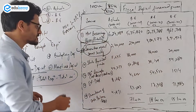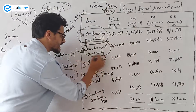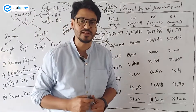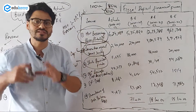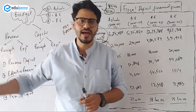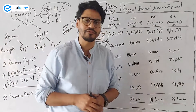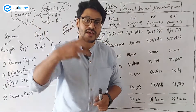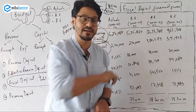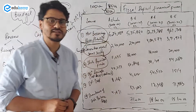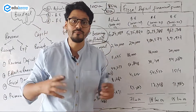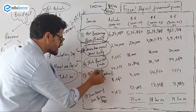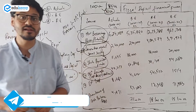After that, the state provident fund is also an important source of fiscal deficit financing. The provident funds that exist in the states — money invested in provident funds for retirement — the government takes some money from those state provident funds. Around 18,000 crore has been taken by the government from the state provident fund.